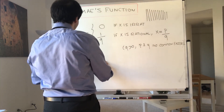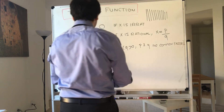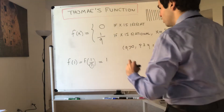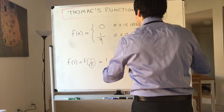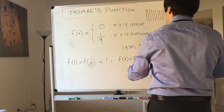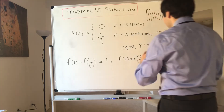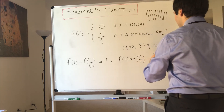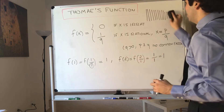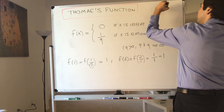For instance, what is f of 1? Well, that is f of 1 over 1, so q is 1, and that becomes 1 over 1, which is 1. But also f of 2 — it's f of 2 over 1 — so that becomes 1 over 1, which is 1. In fact, you'll see at every integer the function is 1. So even at 0 the function is 1, because 0 is 0 over 1.